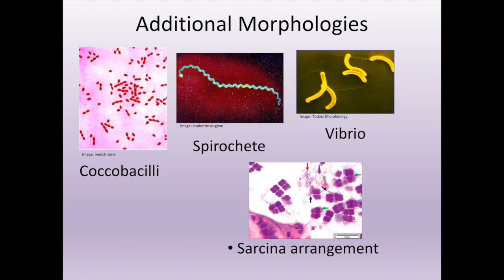There are a few exceptions and some additional morphologies to bacteria. We have what are called coccobacilli. Coccobacilli are rods that are really short and more of an oval shape. They are actually a bacillus bacteria morphologically, but they are sometimes mistaken for cocci under the microscope because they are so short. So when you look into the microscope and you see something that's kind of oval shaped and you're going, 'is that a rod, is that a cocci?' — nine times out of ten it's a coccobacilli. That particular morphology is kind of in between a true bacilli and a cocci.